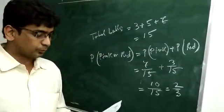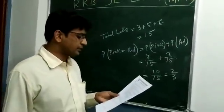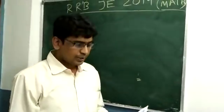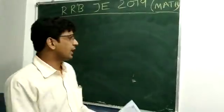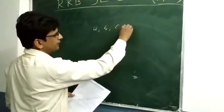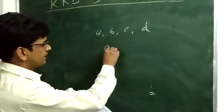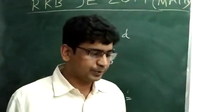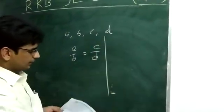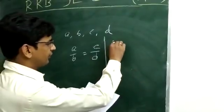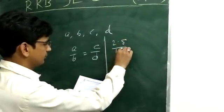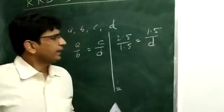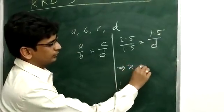Next, problem number 2: calculate the fourth proportional to the numbers 2.5, 1.5, and 1.5. Using the formula a by b is equal to c by d, we get 2.5 by 1.5 is equal to 1.5 divided by d.